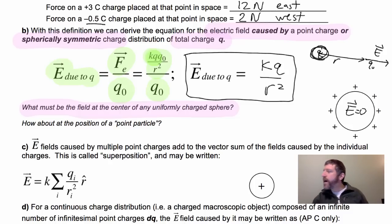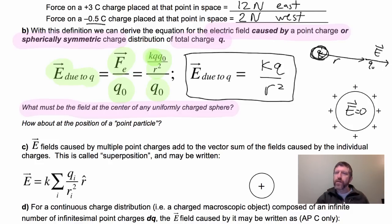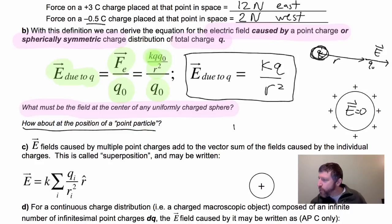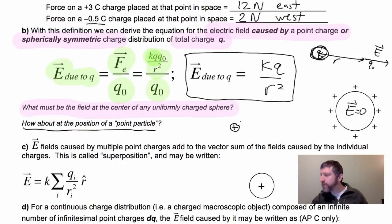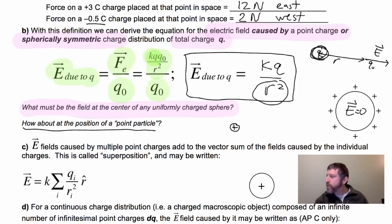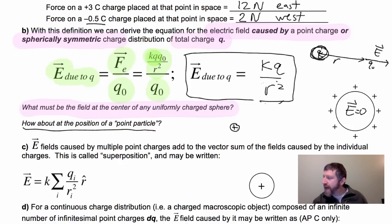E equals zero inside the conductor. That makes sense — this thing cannot push itself around. Similarly, for a point particle, the field caused by that particle at the position of the particle itself would have r = 0, which would blow up to infinity. So we say the field due to the charge at its own location is zero.